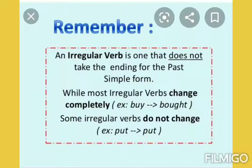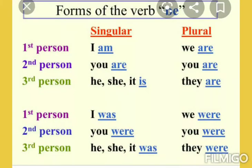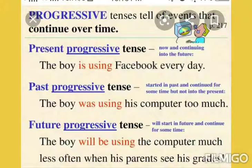Remember children, a regular verb is one that does not take a D or ED ending for the past simple form. Then, another important thing is your be form of verbs: is, am, are for present tense; was, were for past tense. These are your be forms of verbs, and they are used for your continuous tenses.